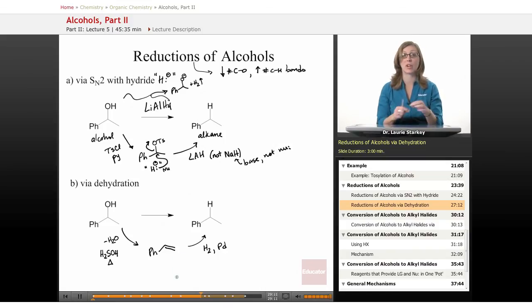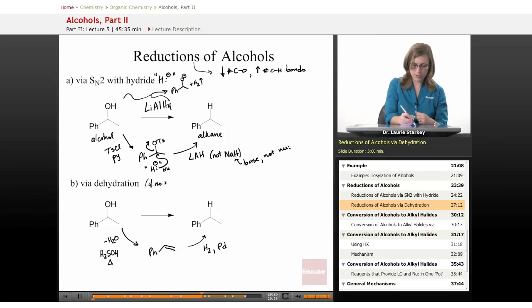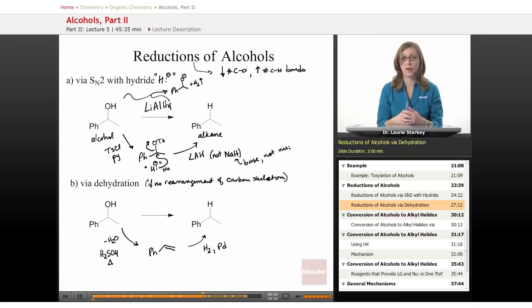So, we don't care so much where the double bond ends up here, but we do want to make sure that our carbocation is not something that can have a carbon chain rearrangement because then that is not going to give us the alkane structure that matches the alcohol structure. So, the dehydration is only going to work if there's no rearrangement of the carbon frame, of the carbon skeleton. And if that's the case, then this is another great way to do the transformation is dehydration followed by reduction.